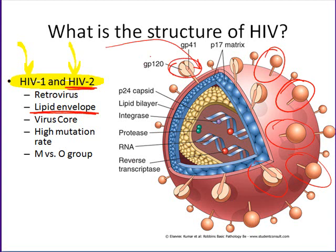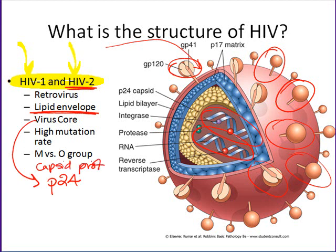Interior to that, there's also going to be RNA — two copies in the virus core. In the virus core, there's something else important: the capsid protein P24. The reason I point this one out specifically is because when people are tested for HIV, this is the principal protein they're trying to detect in the patient's serum. Other things found in the viral core include the reverse transcriptase and other viral enzymes, as well as nucleocapsid proteins.